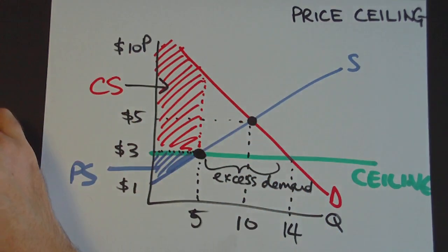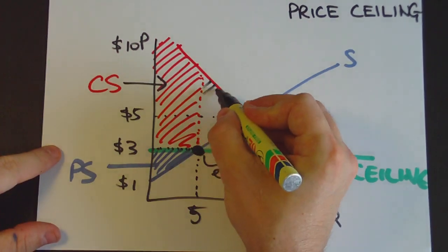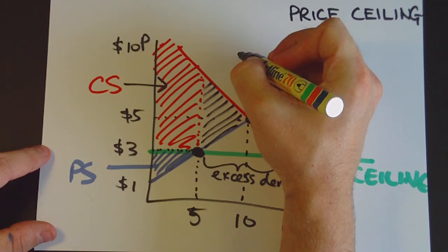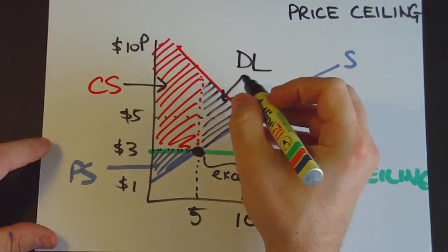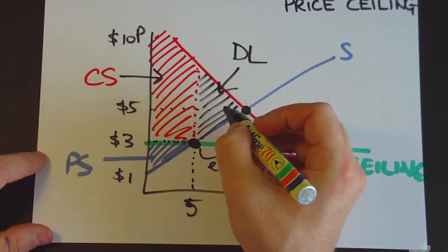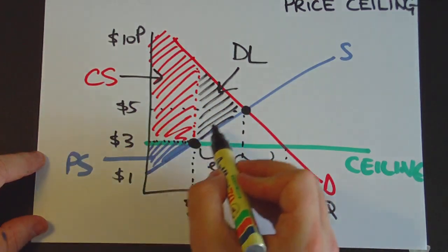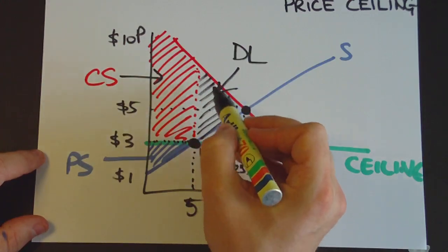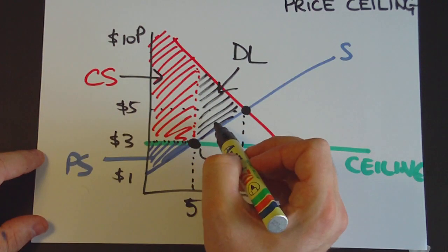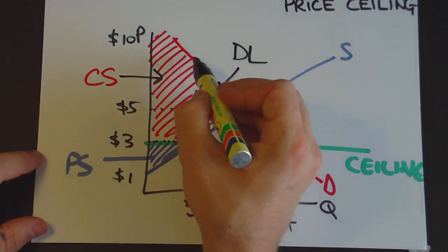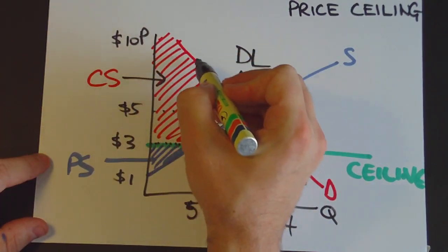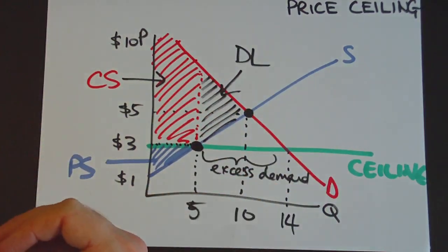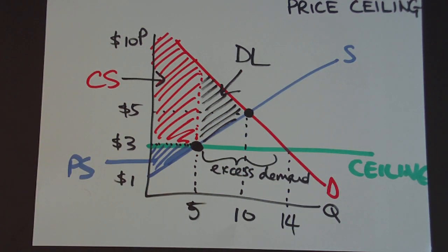Notice this white space here - we've got quite a big deadweight loss here, and no one actually gets that surplus. Under market equilibrium, this was the producer surplus and this was the consumer surplus, divided between buyers and sellers. But under a price ceiling, this is the consumer surplus, this is the producer surplus, and no one gets that area. So that's a deadweight loss to society, and social surplus has actually decreased.